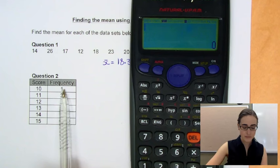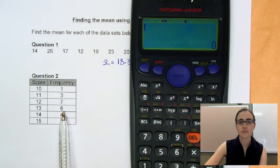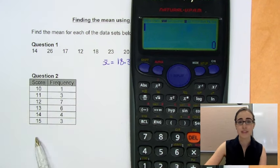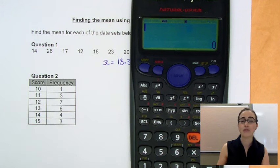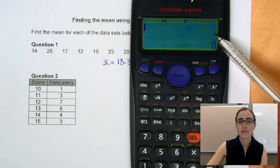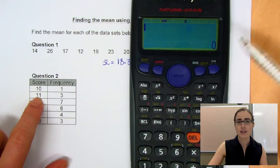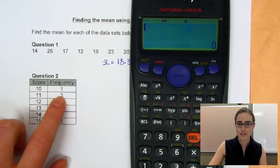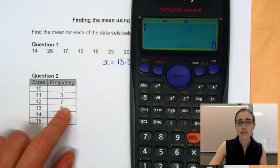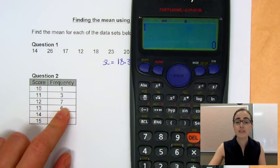For this second data set, because we've got a frequency column, it's a lot more painful to do this the old way of just adding all our numbers together and then dividing. It's even a bit painful to do the way we just did then. If we enter a 10, because there's one 10, and then enter 11, and then 11, and then 11, because there's three of them, and enter a 12 seven times, that's going to be really painful.